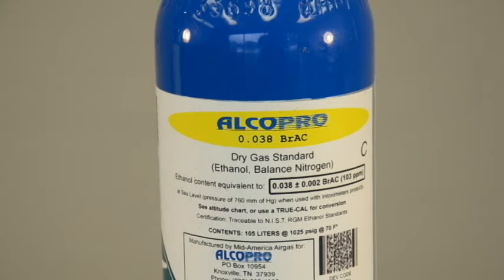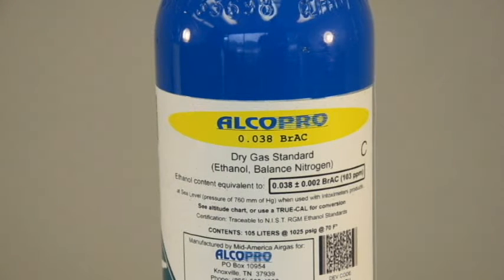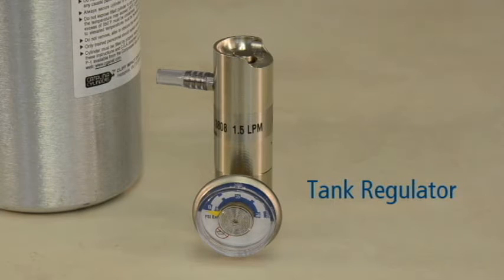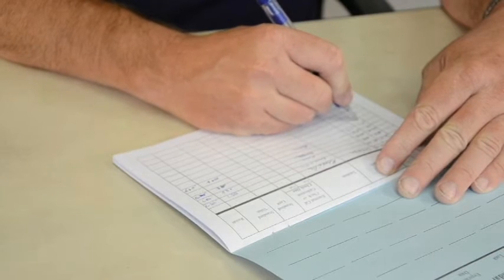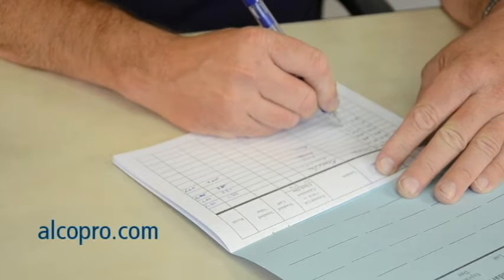The dry gas standard concentration can be located on the gas tank label. You will also need a tank regulator to attach to your dry gas tank. It is a good idea to keep a logbook of accuracy checks and calibrations performed on your device. You can purchase an accuracy check calibration logbook at alcopro.com.